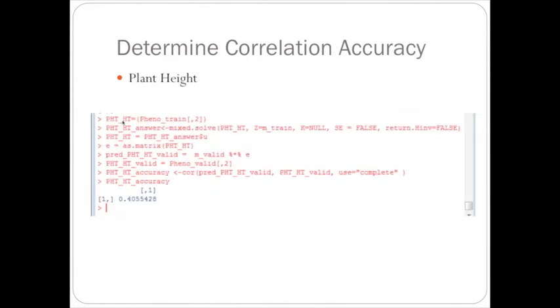So once we have the code set up, it is simple to run for many different traits. So for plant height, that's the second column in the phenotype matrix.